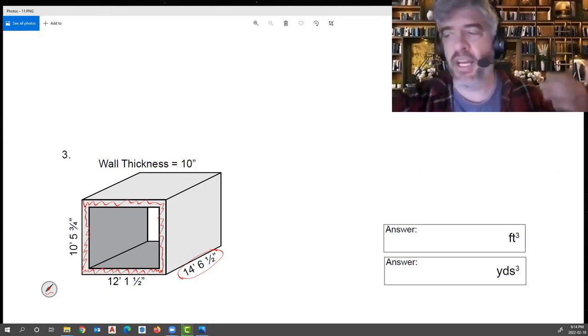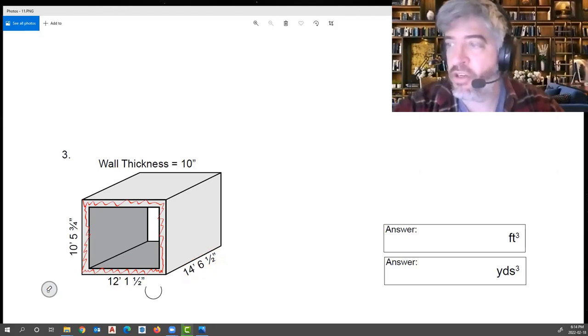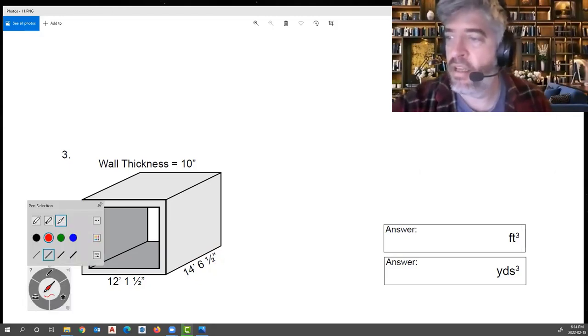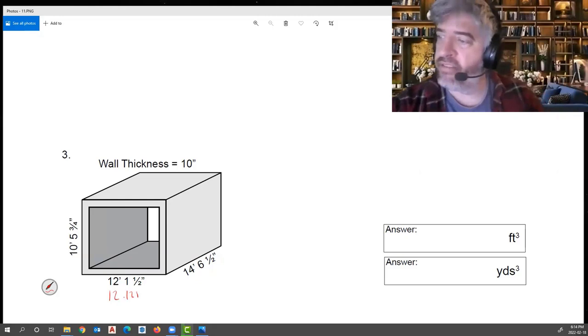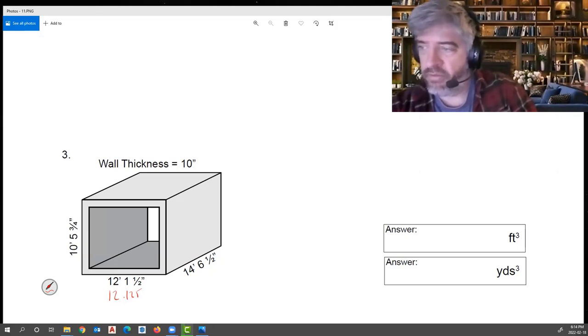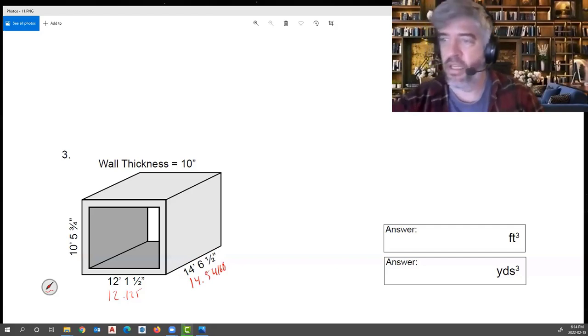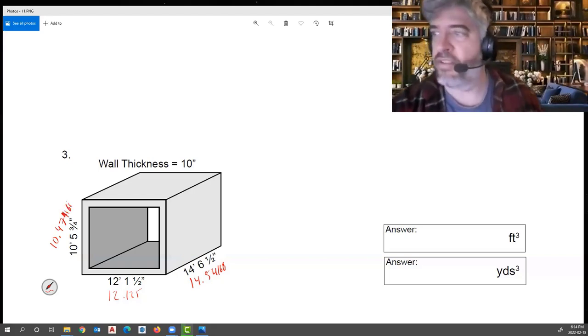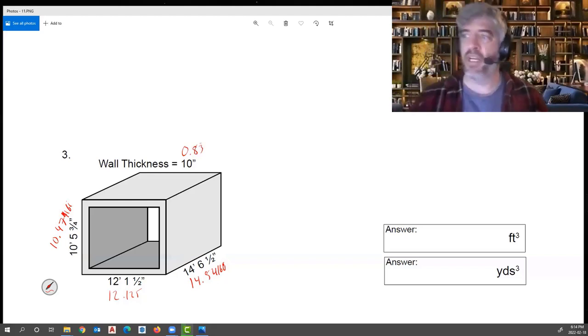Now, with all these problems, guys, there are many different ways you could break this thing up. Before I get started in that, I'm going to put in some dimensions for what this stuff is. So this would be 12.125, 6.5 divided by 12, this would be 14.54166, 5.75 divided by 12, this would be 10.479166, and then this 10 inches would be 0.83 repeating. So that's all my basic numbers done here.